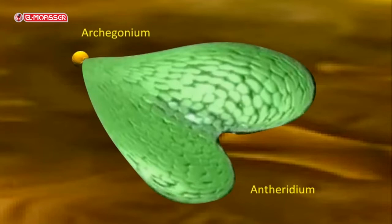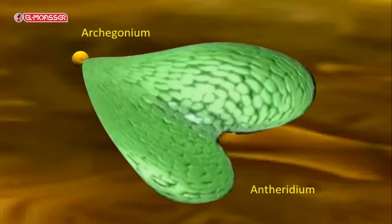On the anterior region of its lower surface, the genital organs or gonads grow. They are two types: male organs called antheridia and the female organs called archegonia.